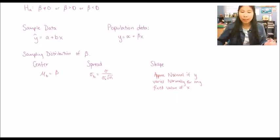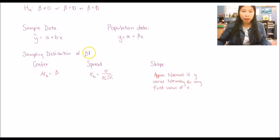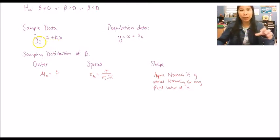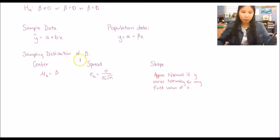Before the example, let's talk about what the sampling distribution of beta looks like. The sampling distribution is when we take many samples of similar size and look at the parameter across all of them. If we look at one sample slope, then look at many other samples and their slopes — collect the two variables, make scatter plots, figure out the slopes, and plot them all together — that creates the sampling distribution of beta. The center, the average of all those slopes, should equal the population slope.